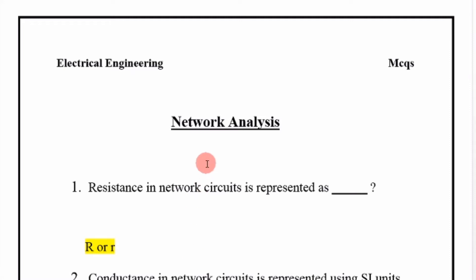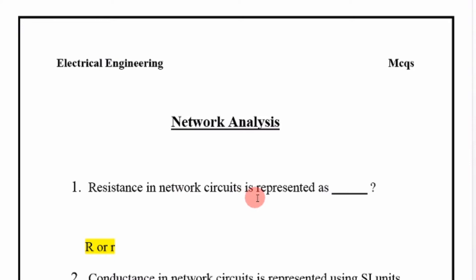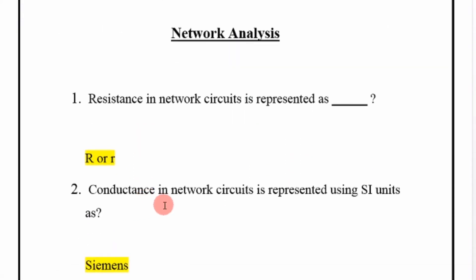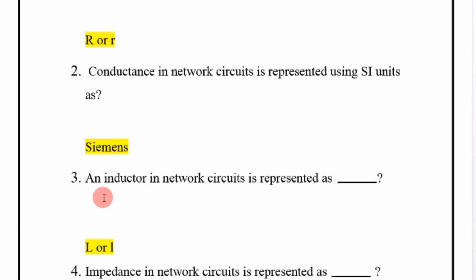Welcome to the next lecture of network analysis. Resistance in network circuits is represented as R. Conductance in network circuits is represented using SI units as Siemens.